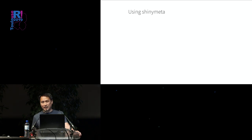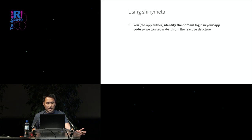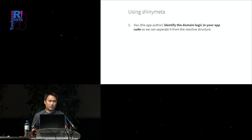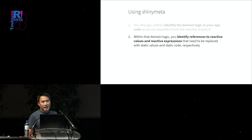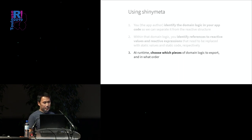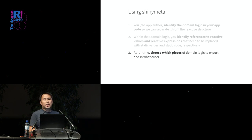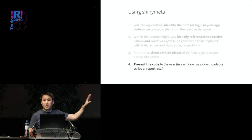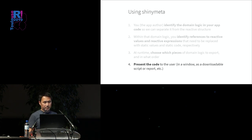Let's talk about how to use Shiny Meta. There are four steps. First, you the app author identify what parts of your app are the domain logic — the essential analysis code. Second, within that domain logic, identify all the places where you're reading reactive values or reactive expressions. Third, now that your domain logic is separated out, decide which particular pieces you want to expose to the user. Finally, add some button or widget so the user can tell you 'I want to see code now' or 'I want to download a bundle.' We'll go through each step in detail.